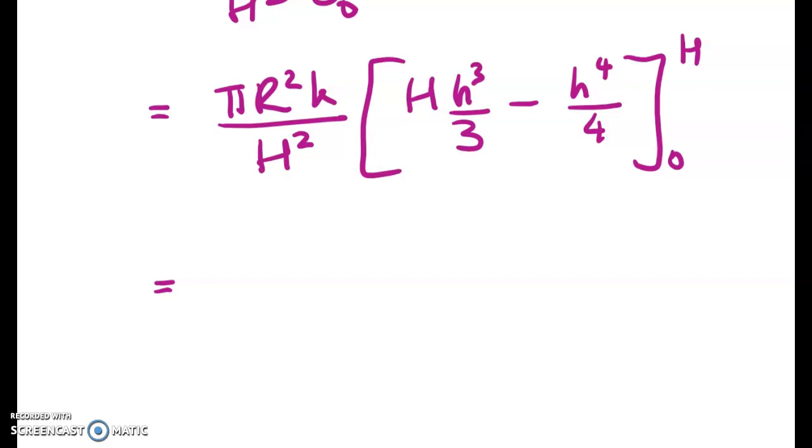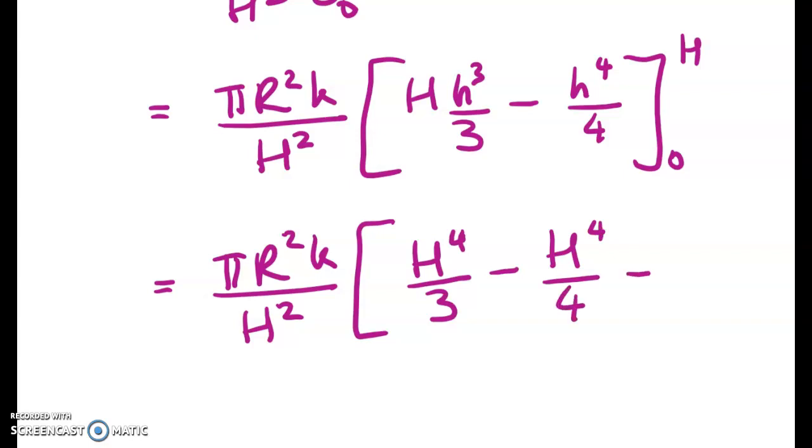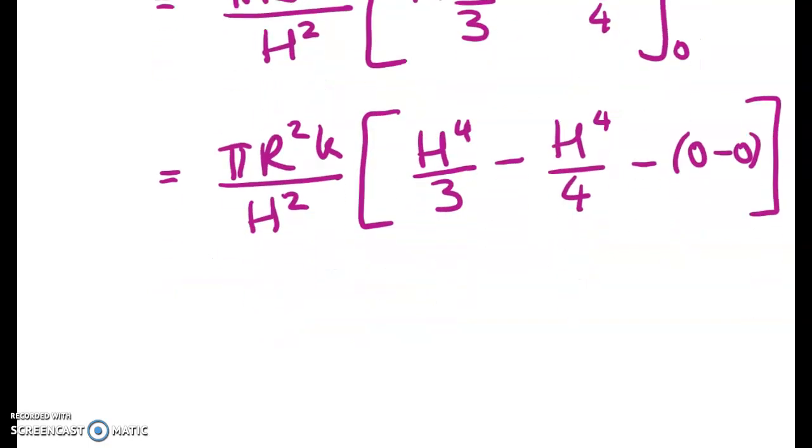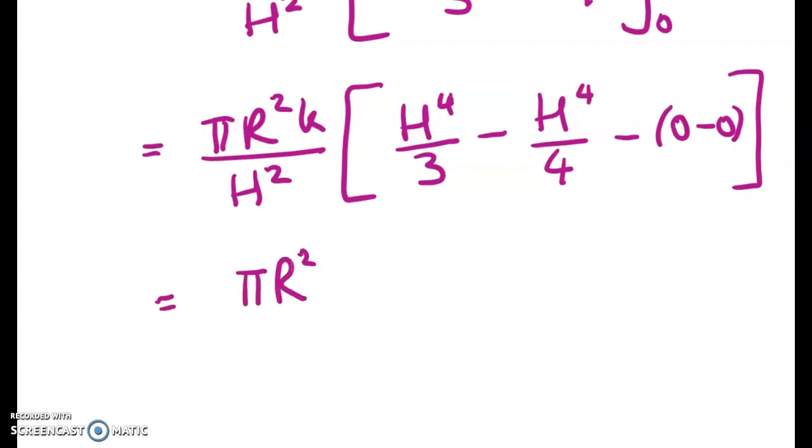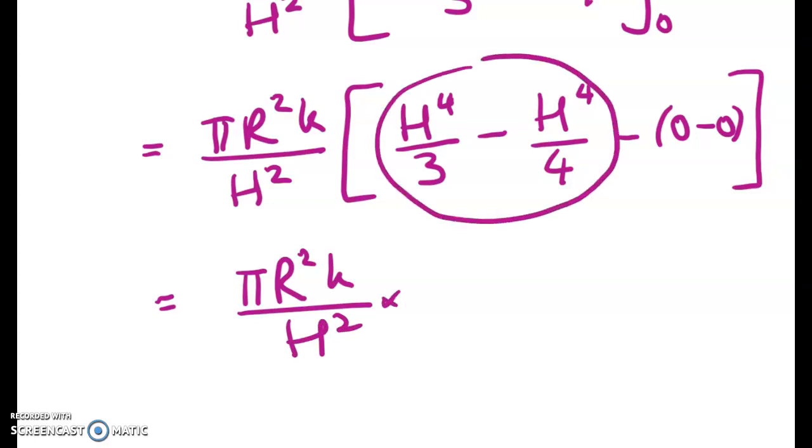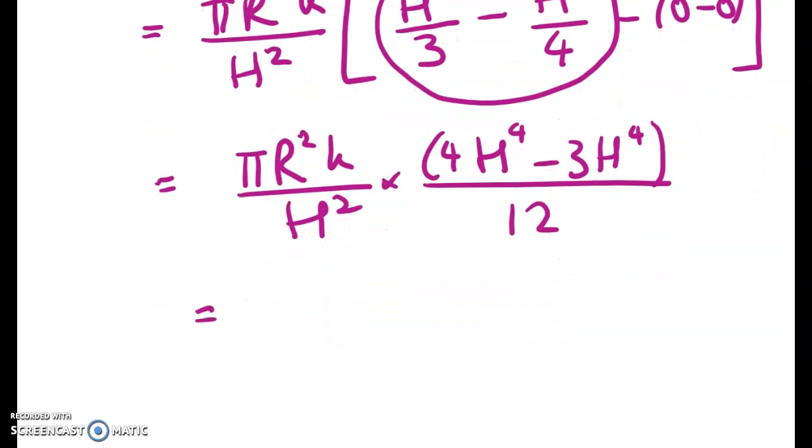Now hopefully you can see that we're going to end up with a denominator in here of 12 which is very nice because 12 is 6 times 2 which is what we had earlier. And again the lower limit gives me zero and zero. So cleaning all of that up gives me this pi R squared k over H squared. And then when we get a common denominator here, 4 H to the power of 4 minus 3 H to the power of 4 over 12 which gives me pi R squared k big H squared.